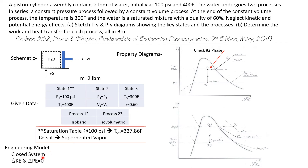Our engineering model: we're dealing with a closed system and we'll ignore any changes in kinetic and potential energy, setting both to zero. Specifically, we want to find the work and heat transfer for process one to two, and also the work and heat transfer for process two to three.